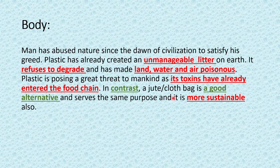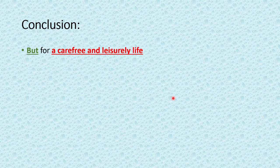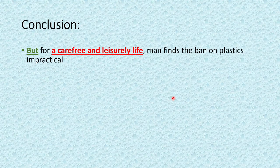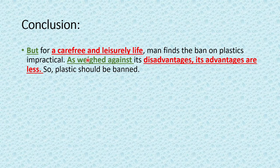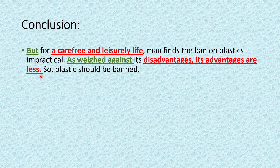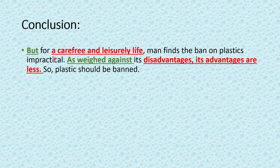Now we come to the conclusion. 'But for a carefree and leisurely life, man finds the ban on plastics impractical. As weighed against its disadvantages, its advantages are less. So plastic should be banned.' Here I have concluded that because man wants a carefree and leisurely life and wants everything simpler, he finds the ban impractical. But as weighed against its disadvantages, its advantages are very less — that is why plastic should be banned. Underline functional words like 'as weighed against' showing contrast, and 'but' showing comparison — these are counted as functional words.